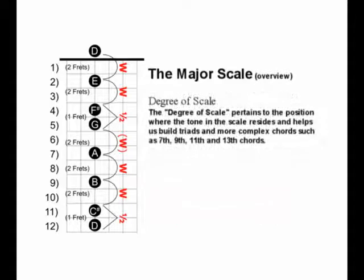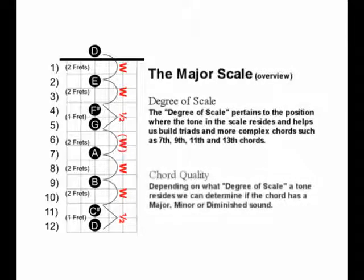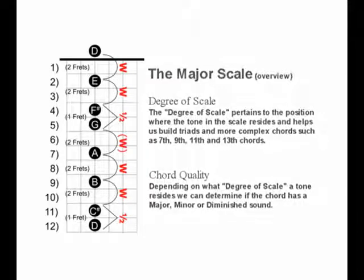I'd like to talk about the degree of scale, and this pertains to the position of where the tone in the scale resides. This helps us build triads and more complex chords, such as 7th, 9th, 11th, and 13th chords. More importantly, we can determine the quality of the chord. Depending on what degree of the scale a tone might reside on, we can determine if the chord has a major, minor, or diminished sound.